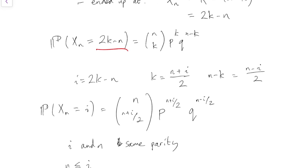And obviously i has to be between minus n and plus n, because that's the biggest or smallest you can possibly get in n steps. You could go up every time and get to n, or you could go down every time and get to minus n. So those are the conditions.